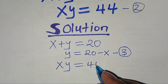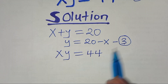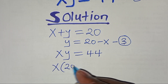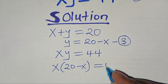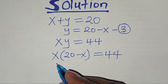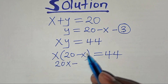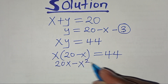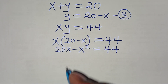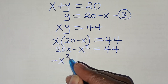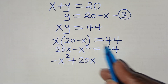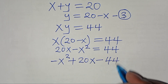Now substitute Equation 3 into Equation 2. Equation 2 is xy equals 44, so substituting we get x times (20 minus x) equals 44. Expanding: 20x minus x squared equals 44. Rearranging gives us negative x squared plus 20x minus 44 equals 0.